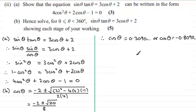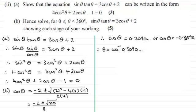We need to do this in two parts. Taking the first: theta equals the inverse cos of 0.3090. And for the second: theta equals the inverse cos of minus 0.8090.